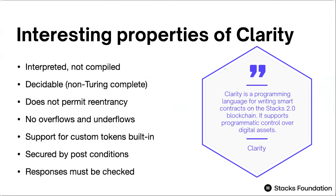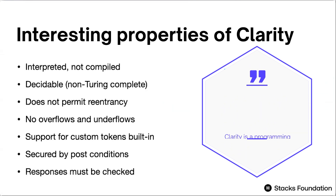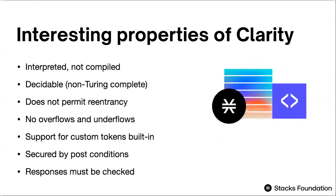If you put a comment, that's also going on-chain. This is different from languages for different blockchains. For example, if you look at Ethereum, the language you write is Solidity. Solidity is a compiled language, which means that there is a program called solc — the Solidity compiler — that takes your Solidity code and converts it to bytecode for the EVM, which is the Ethereum Virtual Machine. This is an additional step that adds an additional layer of complexity.